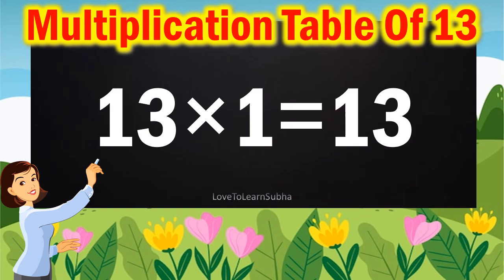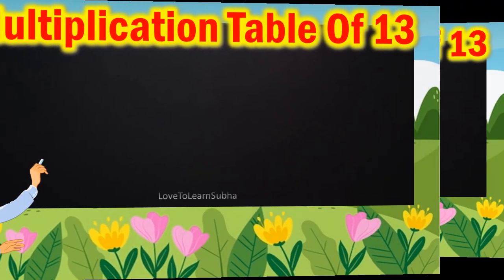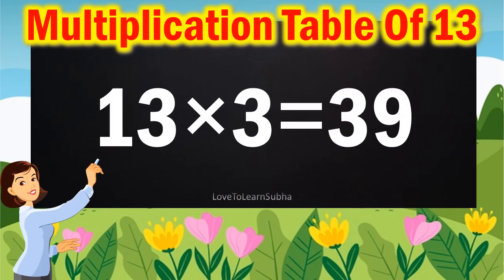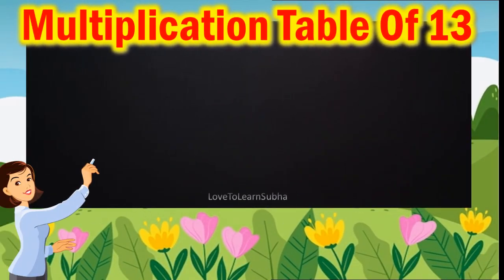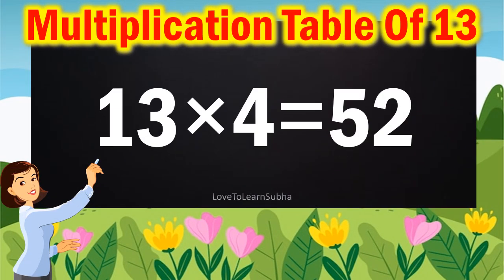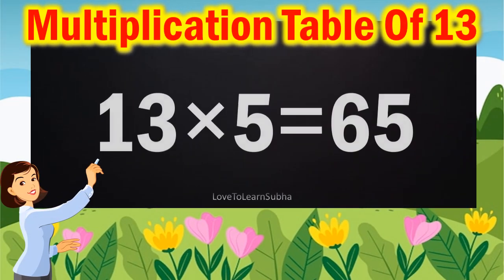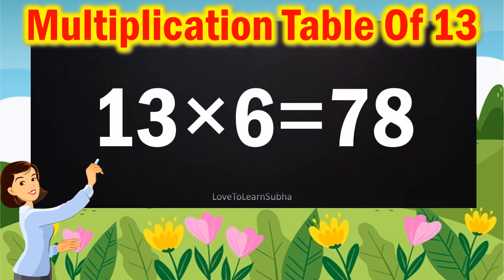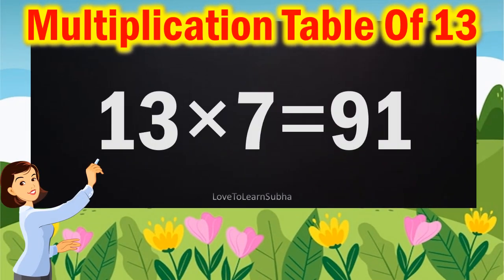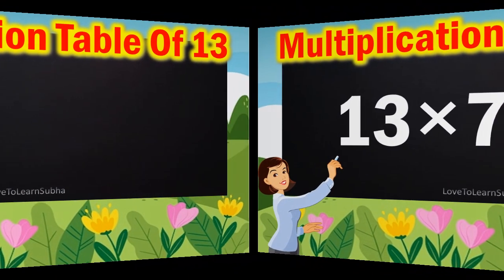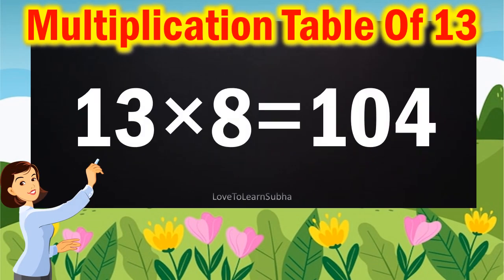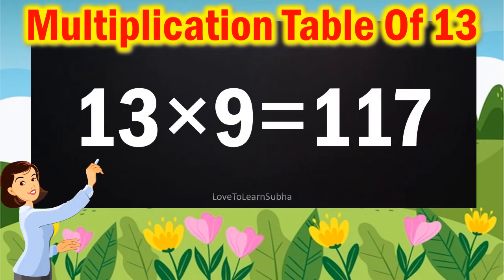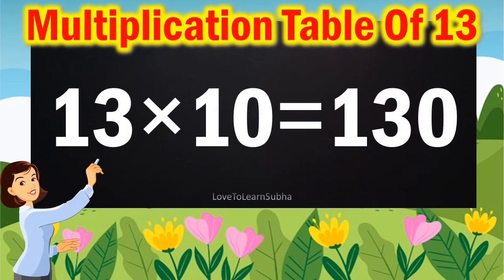13 ones are 13, 13 twos are 26, 13 threes are 39, 13 fours are 52, 13 fives are 65, 13 sixes are 78, 13 sevens are 91, 13 eights are 104, 13 nines are 170, 13 tens are 130.